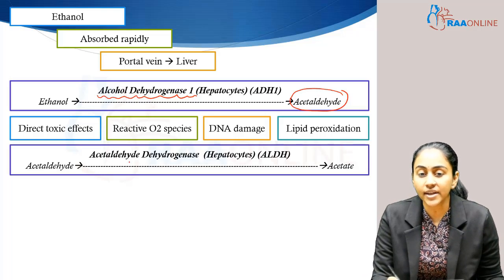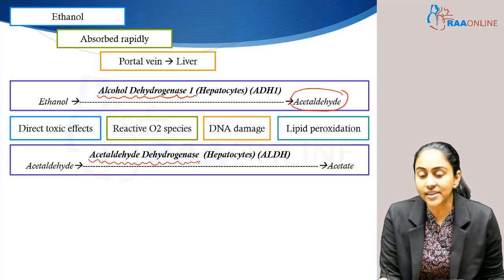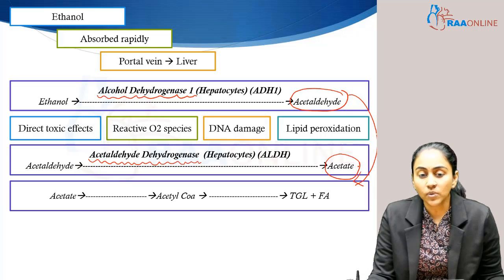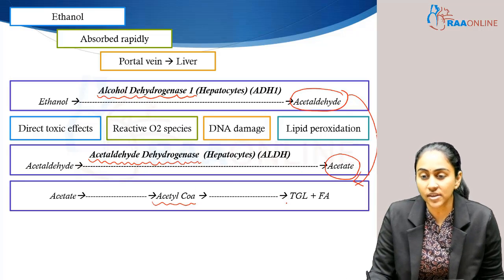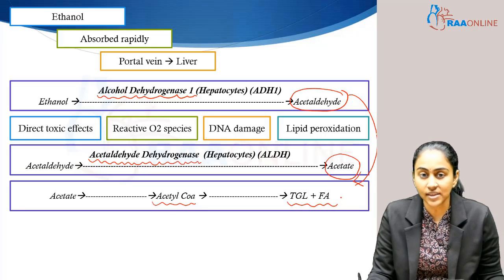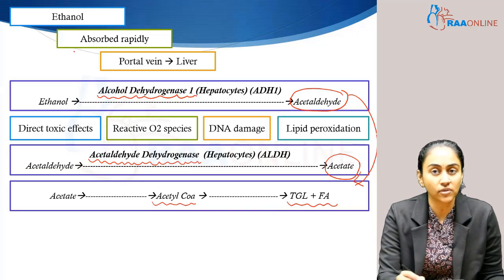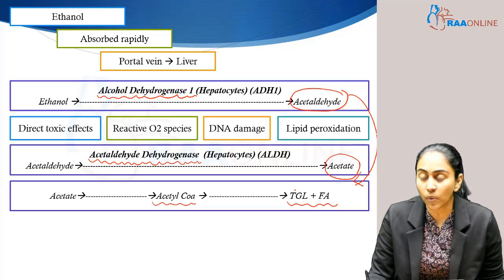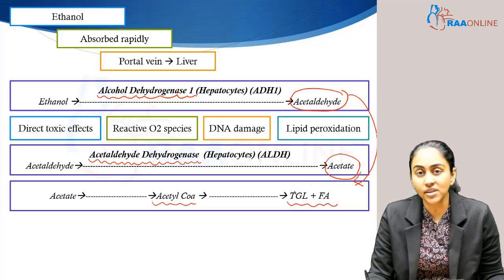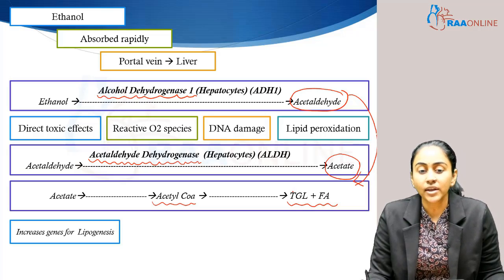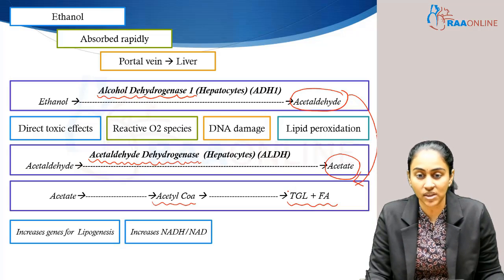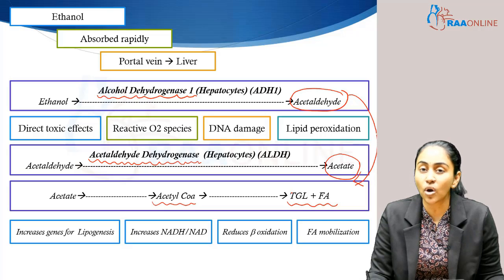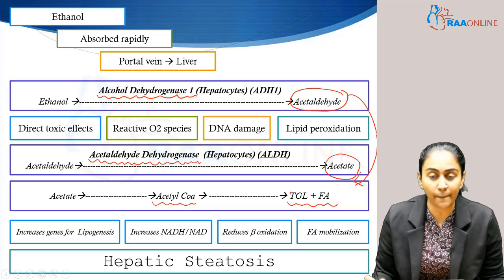The acetaldehyde is then acted upon by another enzyme in the liver called acetaldehyde dehydrogenase, converting acetaldehyde into acetate. This acetate is converted into acetyl-CoA, which is in turn converted into triglycerides and fatty acids. So downstream, ethanol is converted into acetaldehyde, then into acetate, and finally into triglycerides and fatty acids. This also increases genes for lipogenesis, increases the ratio of NADH to NAD, reduces beta oxidation of fatty acids in the mitochondria, and causes fatty acid mobilization — all resulting in hepatic steatosis.